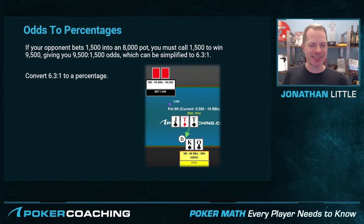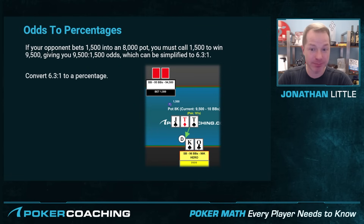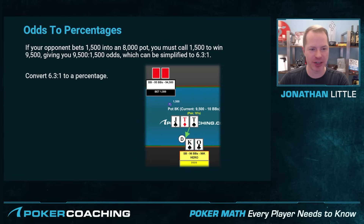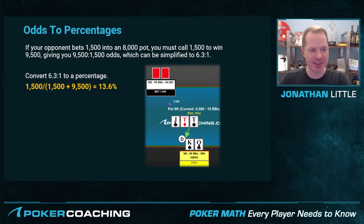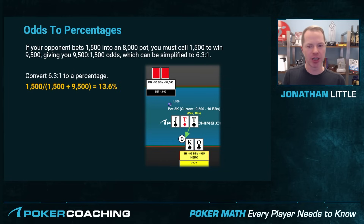What if your opponent bets 1,500 into an 8,000 pot? Now we have to put in 1,500 to win 9,500, giving us 9,500 to 1,500 odds. We do the math again: 1,500 divided by 1,500 plus 9,500 — remember that 9,500 is their bet plus the pot plus the amount we're putting in — and that gives us 13.6% of the time. So if we're going to win more than 13.6% of the time on average, we should stick around; if not, we should fold.